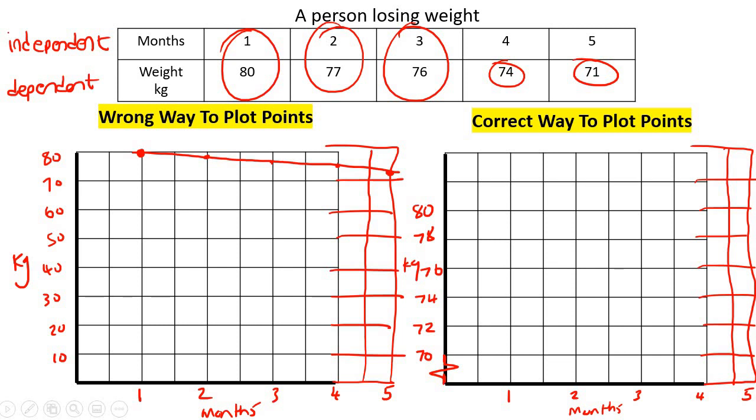Now look at how much better this is going to be. Because now we could plot 1 and 80, which would be over here. And then 2 and 77, so 2 and 77 would be there. 3 and 76. And then 4 and 74, which would be there. And then 5 and 71, which would be like there. Now if you connect the dots, look at that.